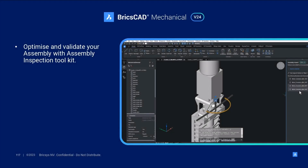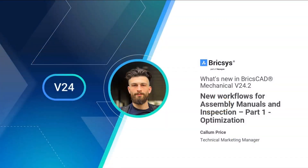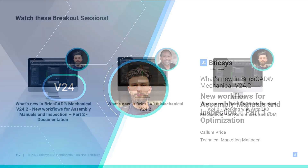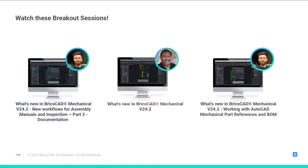In this workflow demo, we've shown that with BricsCAD Mechanical, you can optimize and validate your assembly designs with our assembly inspection workflow toolkit. At BricsCAD we continue to innovate and update our features, like here in V24.2 where we introduced the gravitational stability criteria to assembly inspection, as well as an updated feature dialogue to create a more seamless workflow.